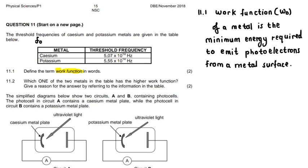Question 11.2 then says which one of the two metals in the table has the higher work function. Give a reason for the answer that you're going to give by referring to the information in the table. Now, for this one, you must just simply understand what we call proportion in physics. So whenever we have an equation that relates to quantities, especially if there is some sort of a constant within that equation, then there is a proportionality that exists, either a direct proportion or inverse proportion.